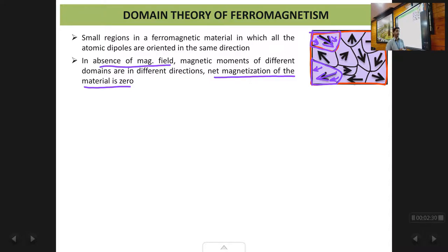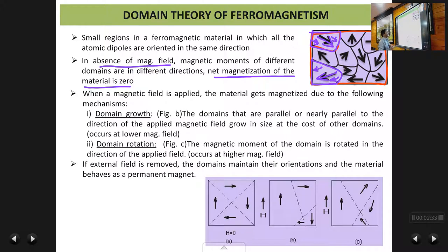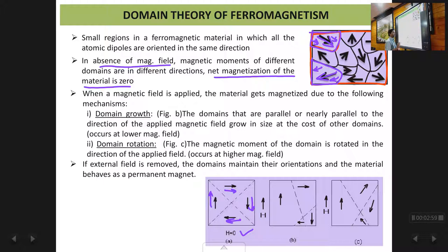Inside a ferromagnetic material when we apply a magnetic field, there are two types of processes which take place. Figure A shows the situation in the absence of a magnetic field where the magnetic domains are randomly oriented so that the net magnetization is zero. When we apply a magnetic field in the upward direction, two processes occur: one is called domain growth and the second one is called domain rotation.